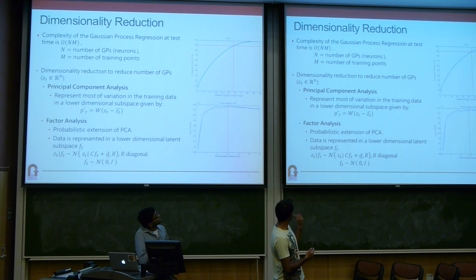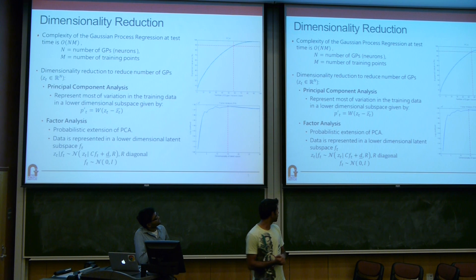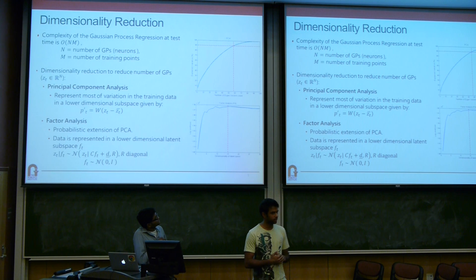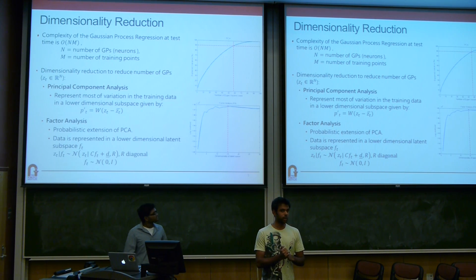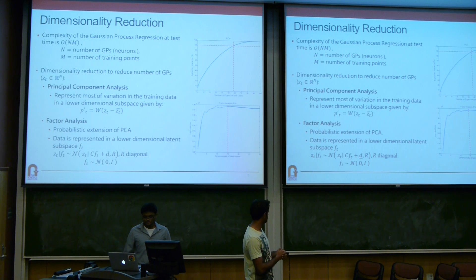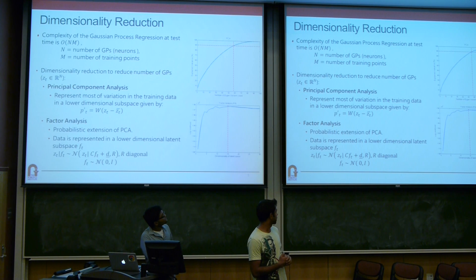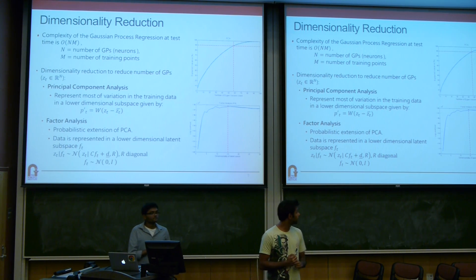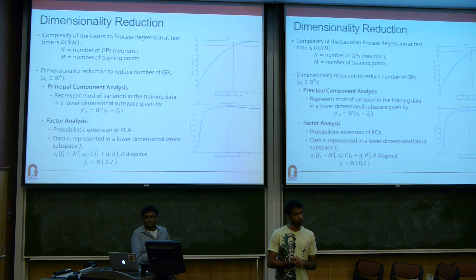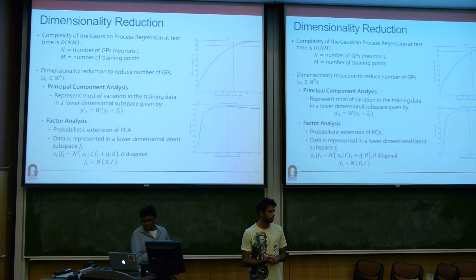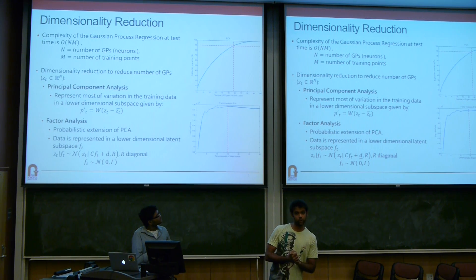So we tried PCA, which is sort of the first thing to try, and factor analysis, which is a probabilistic extension of PCA that assumes a linear Gaussian relationship between your latents and your high-dimensional space. The way we choose the number of dimensions for PCA is we pick the number of principal components that capture at least 90% of the variance. For our dataset we got a reduction from 97 dimensions to around 58. For factor analysis, because it's a probabilistic framework, we can use cross-validated log-likelihoods to find the best dimensionality, and it actually reduces from 97 all the way down to 15.